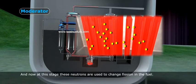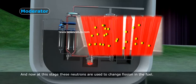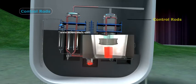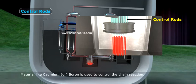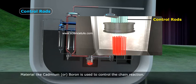And now at this stage these neutrons are used to cause fission in the fuel. Four, control rods: Material like cadmium or boron is used to control the chain reaction.